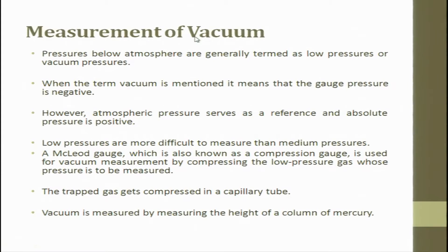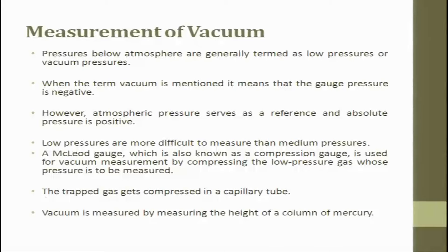Measurement of vacuum. So, till now we saw atmospheric pressure and total pressure. Now we have gone into measurement of vacuum. In measurement of vacuum, pressure below atmosphere are generally termed as low pressure or vacuum. When the term vacuum is mentioned, it means that the gauge pressure is negative. When the gauge pressure is negative, it is called as vacuum.